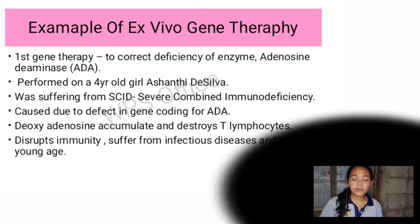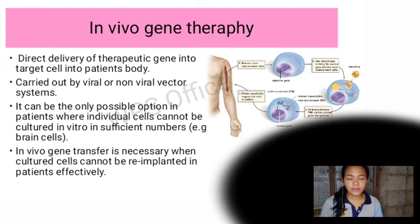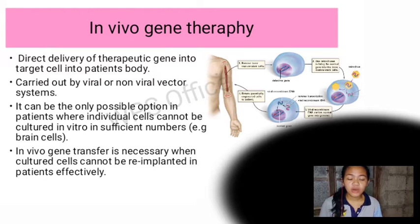In SCID, oxyadenosine accumulates and destroys T-lymphocytes, disrupting immunity. Patients suffer from infectious disease and die at a young age. In vivo gene therapy involves the direct delivery of a therapeutic gene into target cells within the patient's body, carried out by viral or non-viral vector systems. It is only a possible option in patients where individual cells cannot be cultured in vitro.